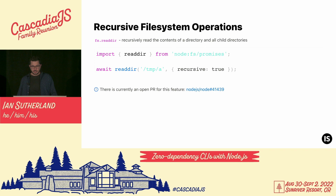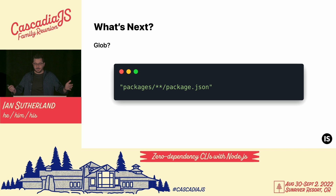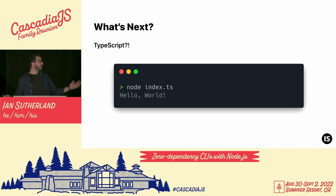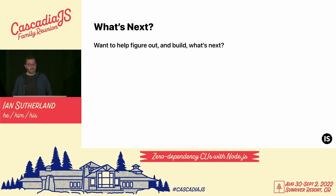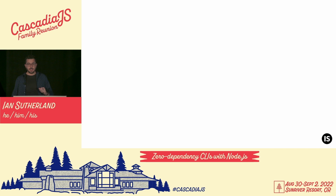That's all the new stuff I wanted to talk about today. Let's take a quick look at what might be coming next — wild speculation edition, I have no insight on any of this. Glob: allows you to use patterns to select multiple files, pairs nicely with recursive file system operations. Self-contained executables: you can compile an executable, and getting rid of that dependency install step is great, but you're still depending on users to have a compatible version of Node — this would solve that. TypeScript? I don't know — as far as I know this isn't happening yet, but I've seen some chatter about it on Twitter and from a group called Next10. Do you want to help figure out and build what's next? Join the Node tooling group — you can find us on GitHub. And yeah, that's all I've got for today. Thanks everyone.